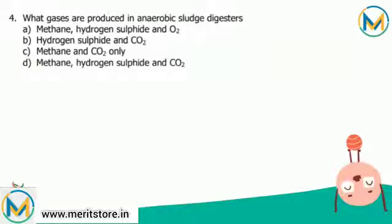What gases are produced in an anaerobic sludge digester? Anaerobic sludge digestion is carried out in the absence of oxygen. It is considered economical as it does not require any aeration system. It takes place in four steps: hydrolysis, acidogenesis, acetogenesis, and methanogenesis.